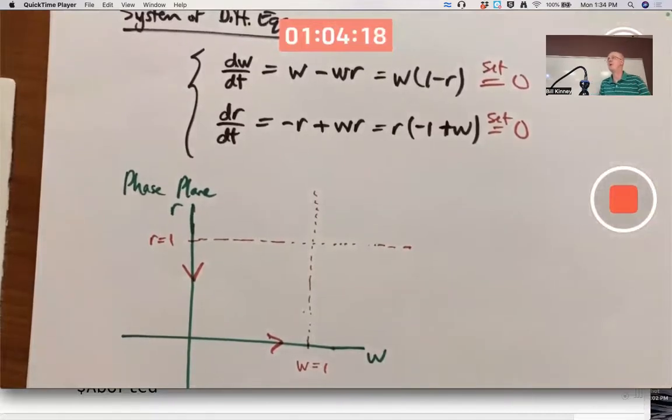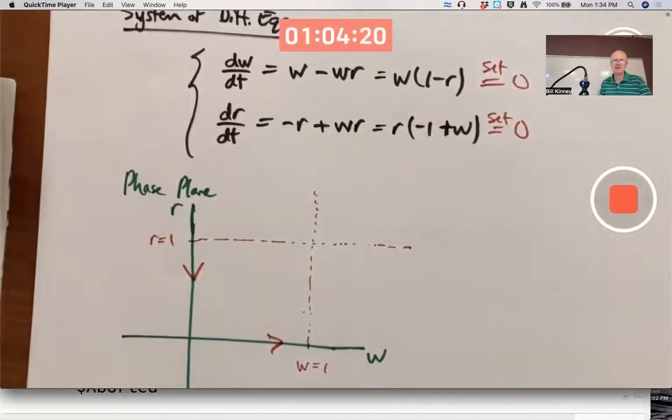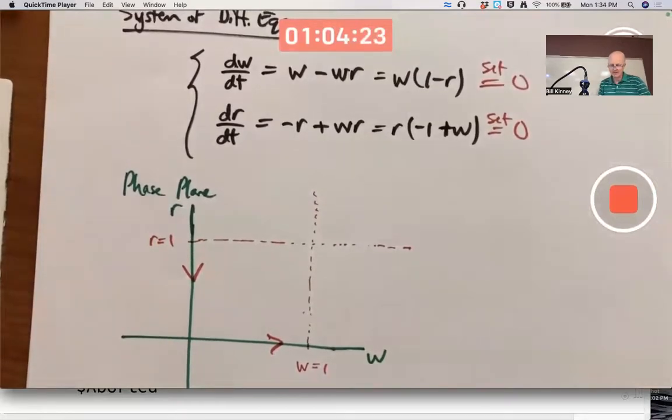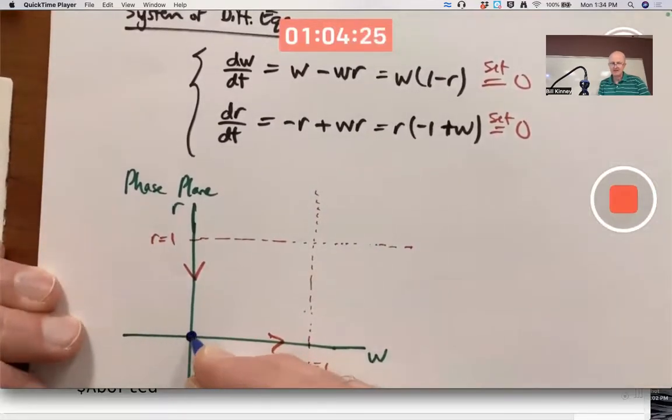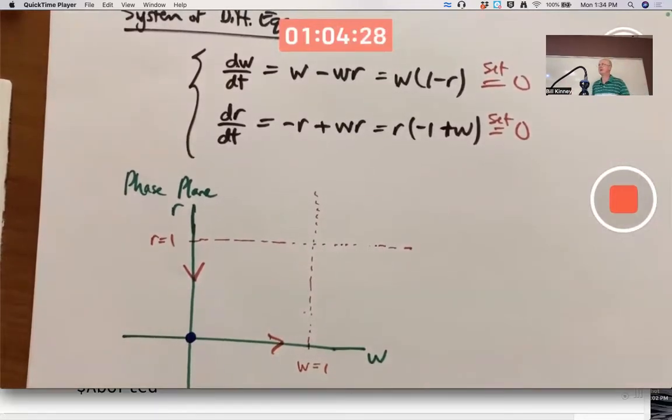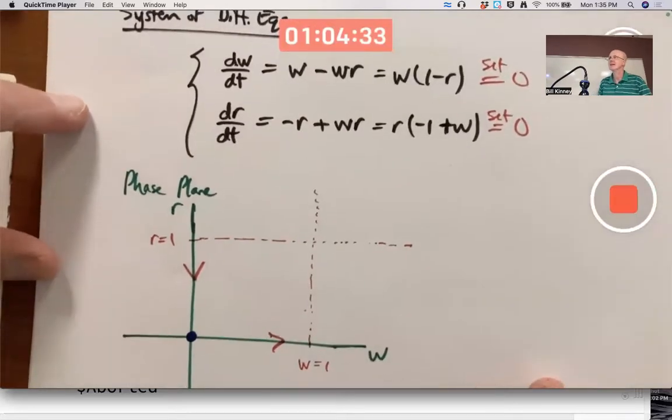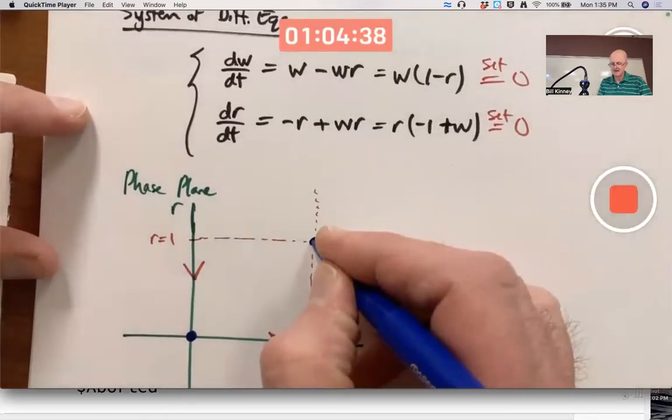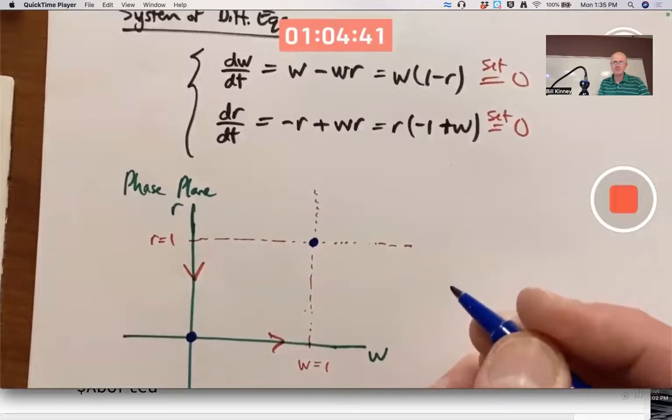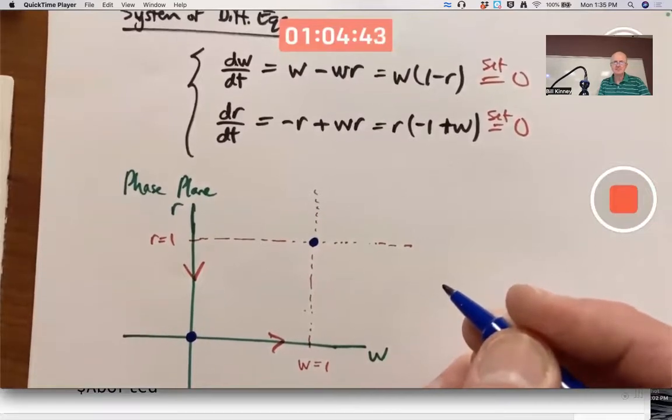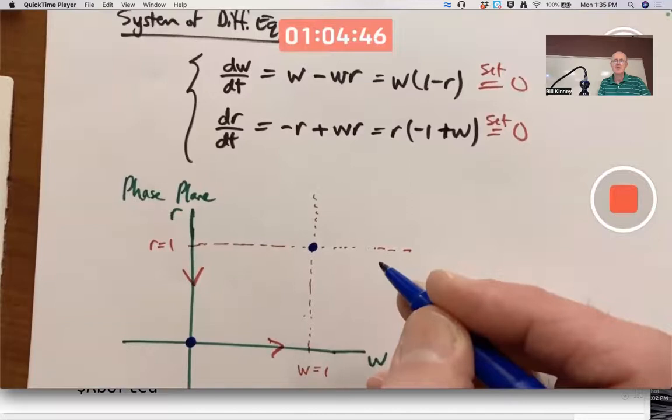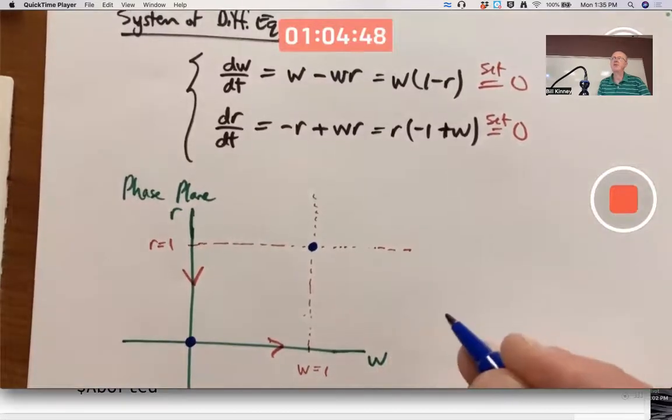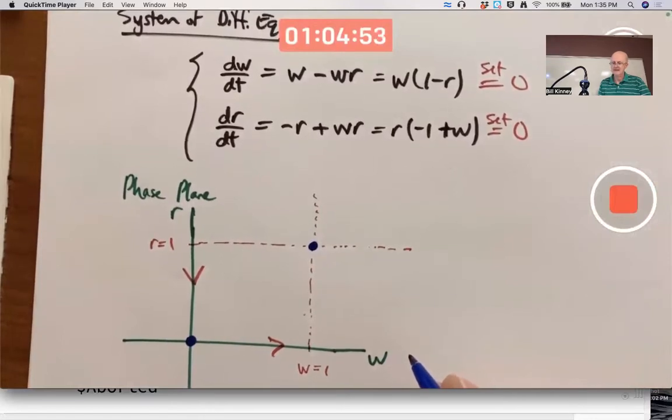There's two spots where both dR/dt and dW/dt are zero. The origin is one such spot. If there's no robins and no worms, there are never going to be any robins or worms. Another spot where both are zero is right here. If R is one and W is one, both rates of change are zero. And since they're both zero, they are both going to stay constant at one.